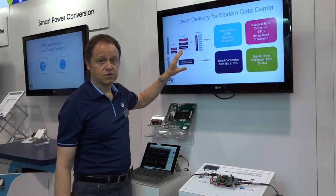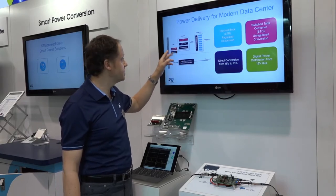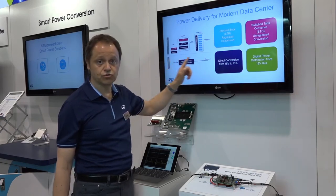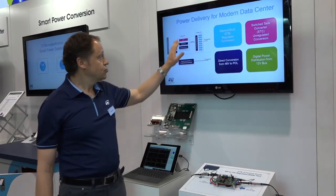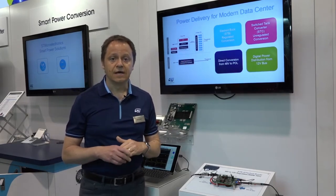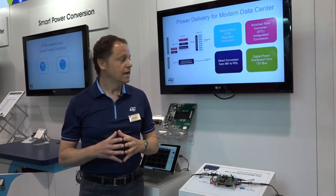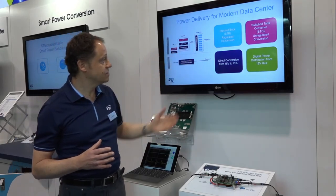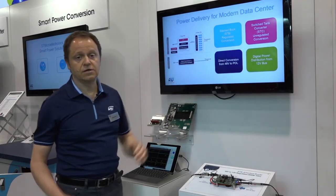The other class of products or architectures we have are transformer-based, and they can serve both the intermediate bus conversion or the direct conversion straight from 48 volts down to the CPU. The usage of these topologies maximizes system efficiency, power density, and overall power distribution using off-the-shelf components. The goal is to maximize the efficiency of the whole system from 48 volts down to the point of load.